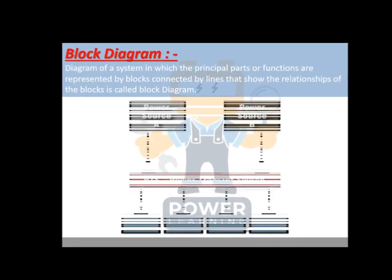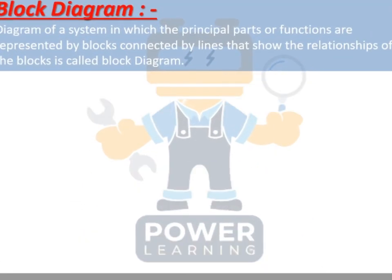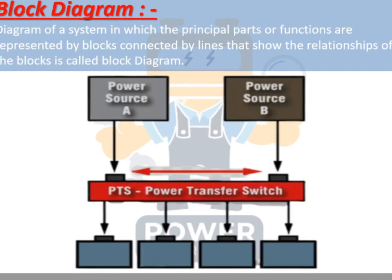So what is a block diagram? A block diagram is a diagram of a system in which the principal parts or functions are represented by blocks connected by lines that show the relationship between the blocks. Let's take an example.